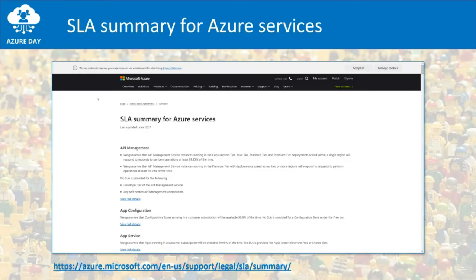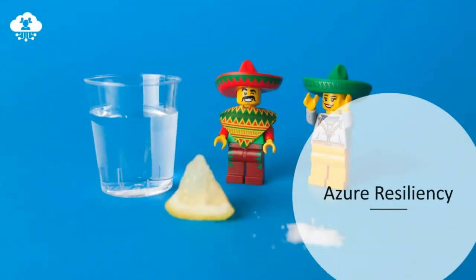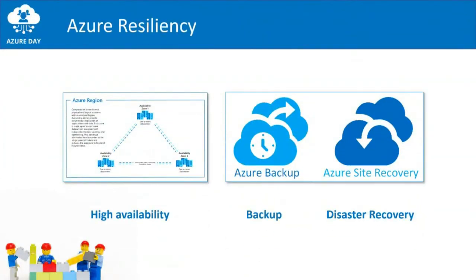Next, let's talk about Azure resiliency. If we look at resiliency in Azure overall, we can mainly talk about three things: high availability — things that are built in to the Azure platform — plus backup and disaster recovery. Make sure you know that next to Azure Backup and Azure Site Recovery, you can use built-in services to make sure your complete environment is highly available.